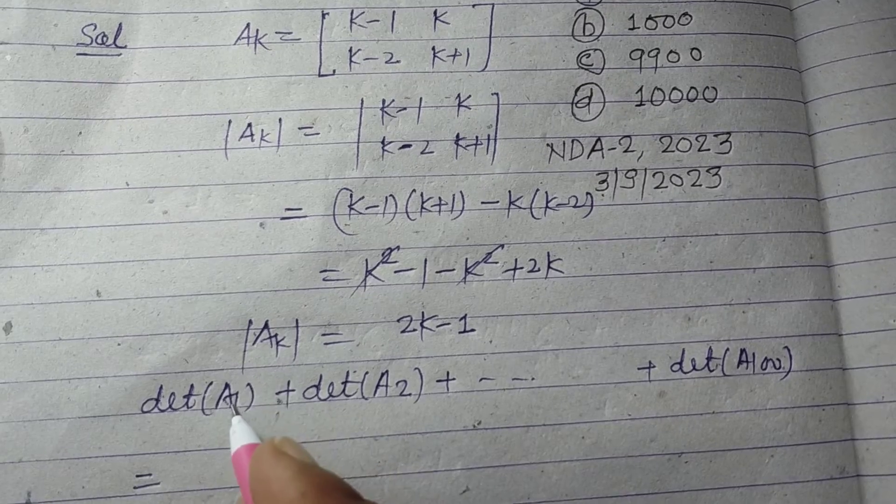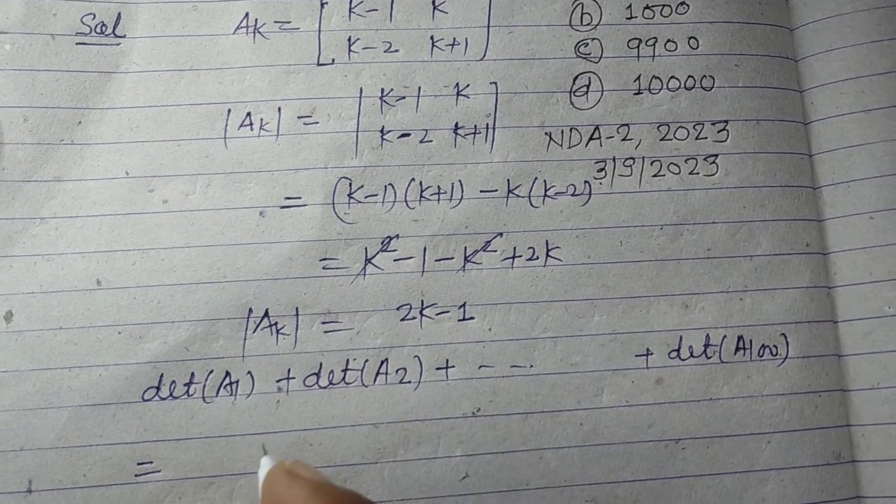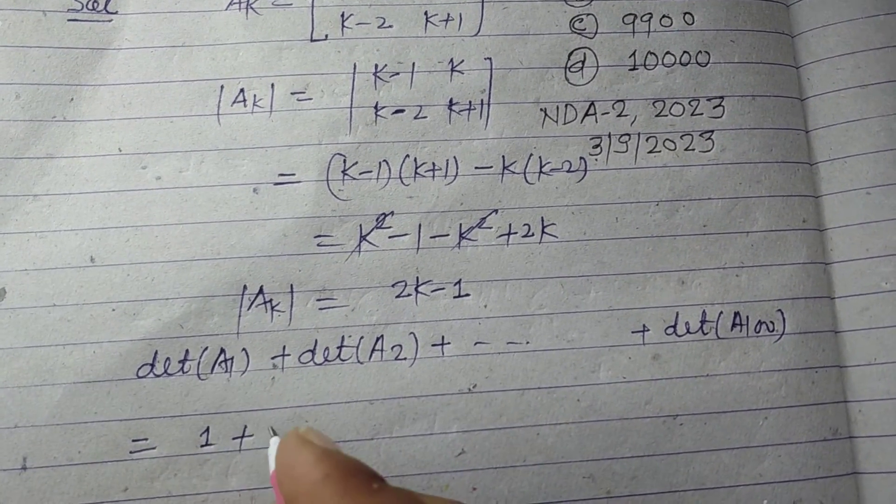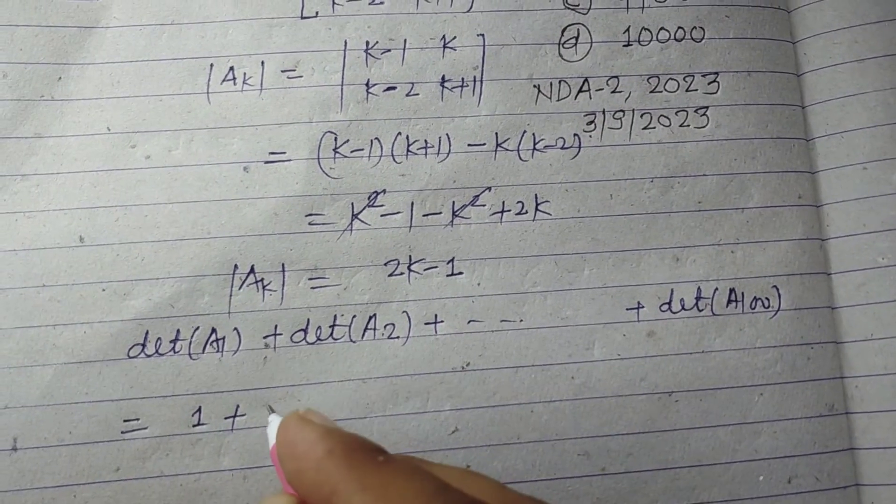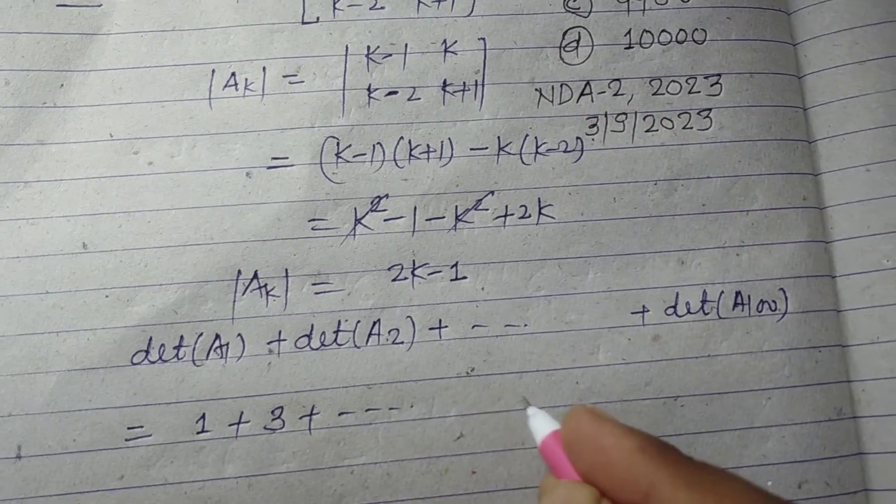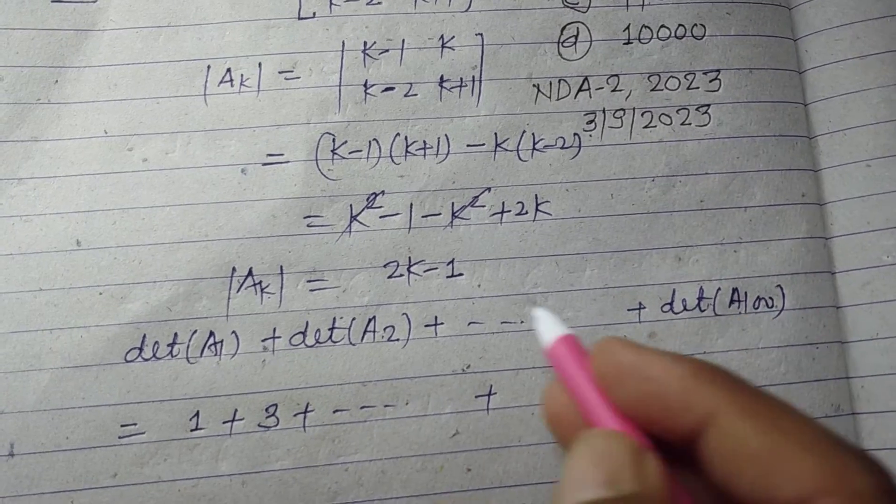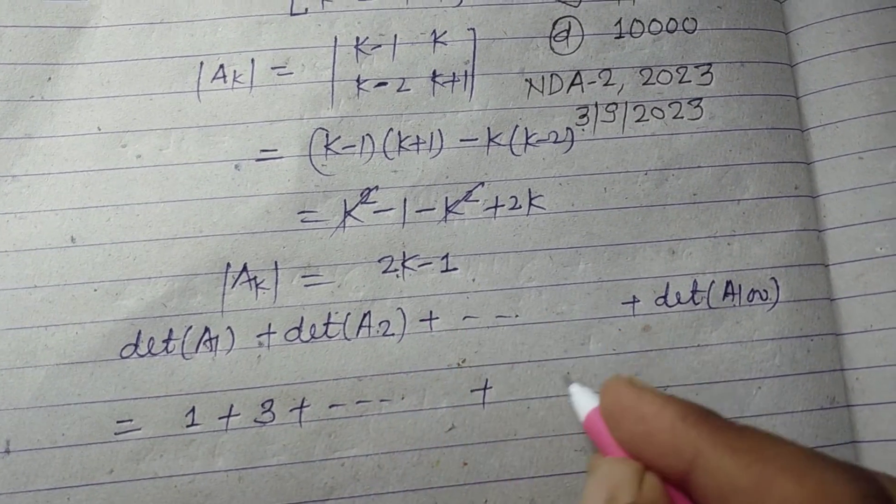So this will be when we put k=1 in this, we get 1. When we put 2, 2(2)-1 equals 3, and so on up to when we put 100, 200-1 equals 199.